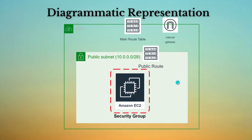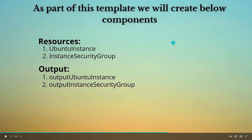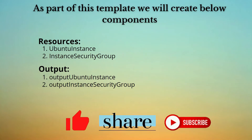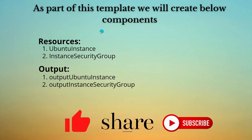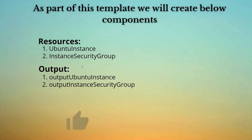The Amazon EC2 instance is going to have a security group which will allow HTTP and SSH traffic. By enabling both ports, you will be able to SSH into the EC2 instance and also access it via port 80 in a browser. What we are going to do differently in this tutorial is install Apache 2 as part of our build template. We are going to create two resources: the EC2 instance and the security group.